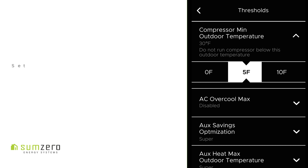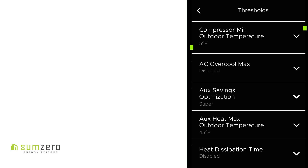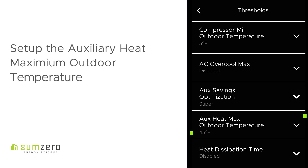In this example, we will set the Minimum Outdoor Temperature to 5 degrees Fahrenheit. Now, we'll set up the Auxiliary Heat Maximum Outdoor Temperature.